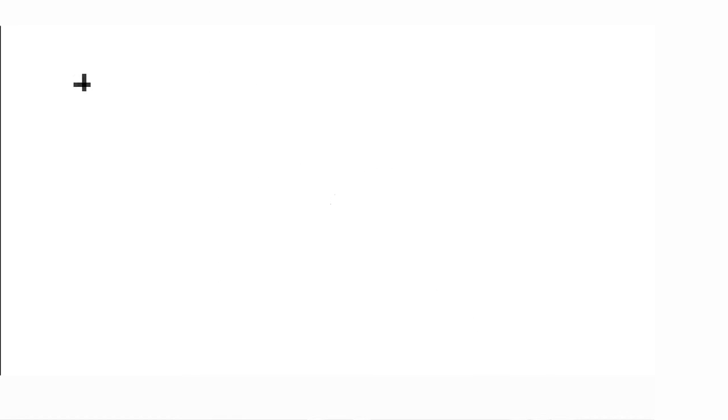Let us take another example. Cube root of 27 ko likh sakte ham cube root of 3 cube into 4th root of 25, which finally gives me answer 3 into 4th root of 25.